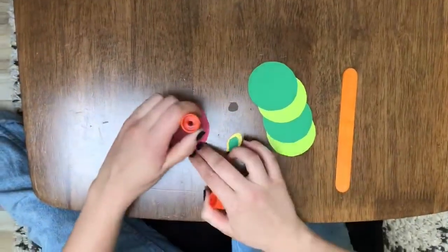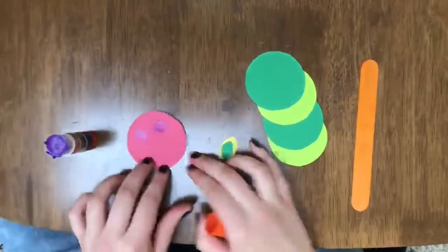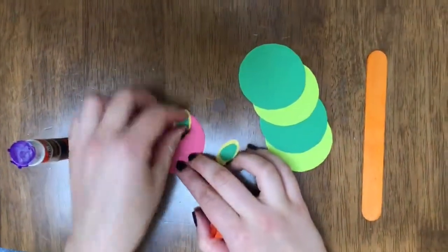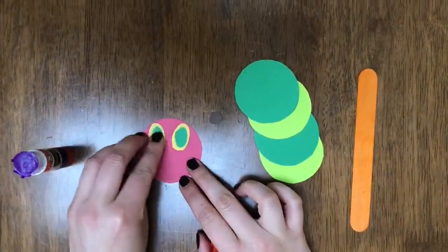So I'm gonna start off by doing the head. We're gonna put two eyes. Very important so the caterpillar can see.